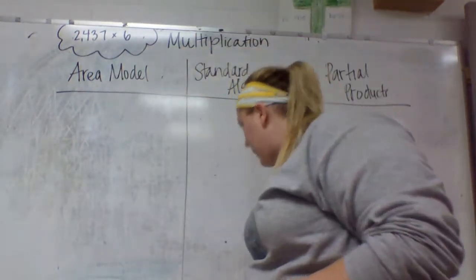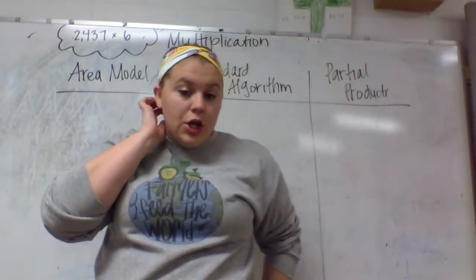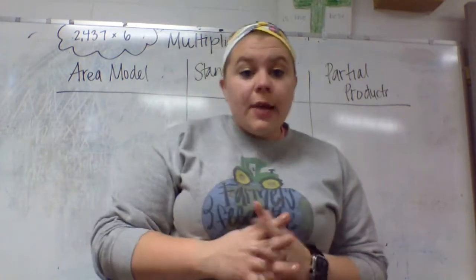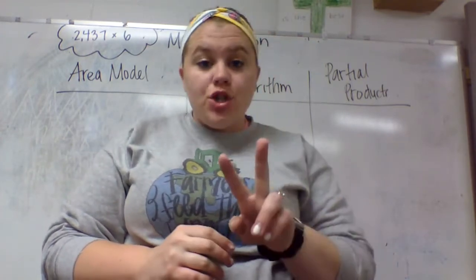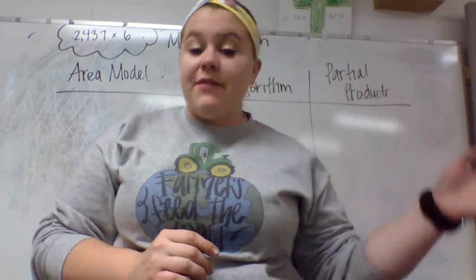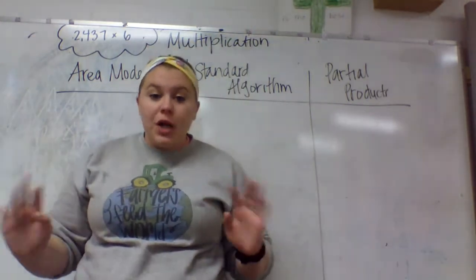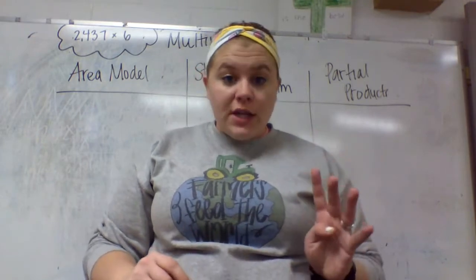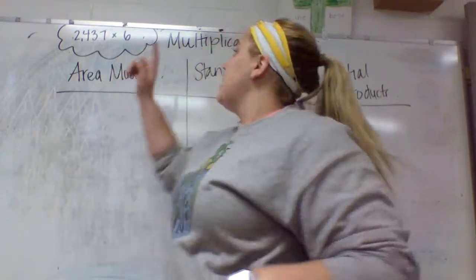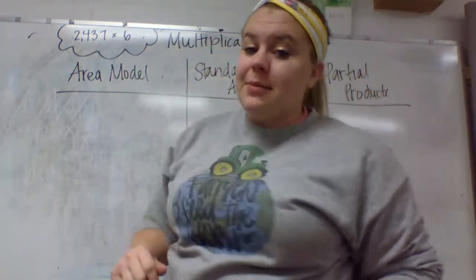Okay, so we are going to talk about multiplication today. We're going to do multiplication by one digit. That could be two digits by one digit, like 57 times 3, three digits by one digit, like 246 times 4, or four digits by one digit, like 2437 times 6.